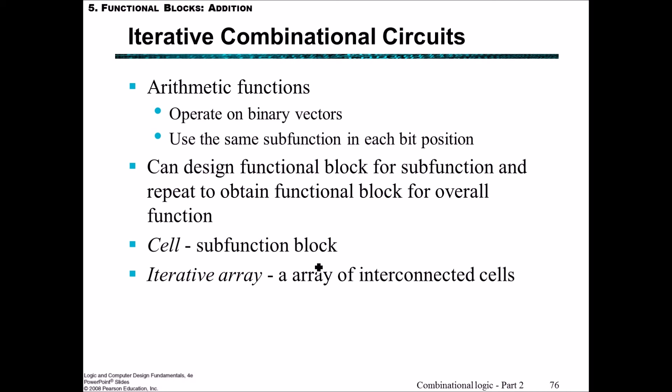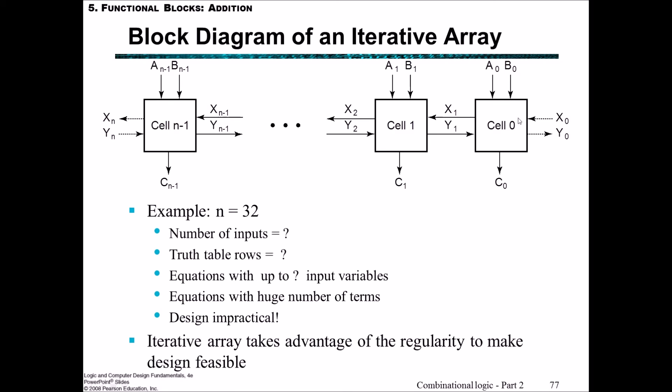Notes on terms: we'll call 'cell' a sub-function block—you'll see a picture on the next slide. An 'iterative array' is an array of interconnected cells. Here's a block diagram of an iterative array of cells from cell 0 through to cell n-1. Each cell has two inputs, A0 and B0. If we had two cells, we'd have four inputs; for 32 cells, we'd have 64 inputs, plus the carry-in from a previous cell, totaling 66.